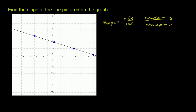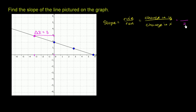Let's start at some arbitrary point on this line — they highlight some of these points. Let's say we want to change our x in the positive direction, so we go to the right, moving from this point to this point over here. We're going from negative 3 to 0, so our change in x — that triangle is delta, meaning change in — our change in x is equal to 3.